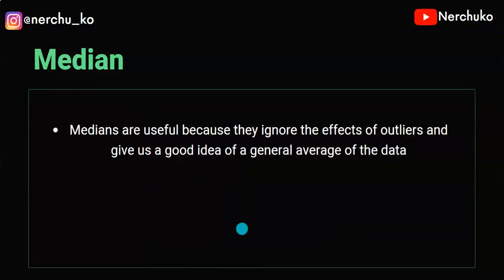Next, we have the Median. Medians are useful because they ignore the effect of outliers and give us a good idea of the general average of the data. So when we have outliers, using the mean can be very weak. If we use the median, then we will get the proper average value. The median is equal to the middle value of the data.